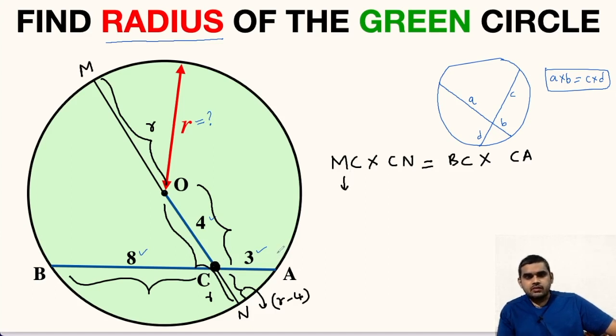M to C what is the distance? This is R plus 4, M to C this is R plus 4. Let us write R plus 4 times CN we already found R minus 4, R minus 4. It is equal to BC is given as 8 units and CA is given as 3 units. If we multiply we will get 24.